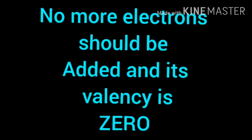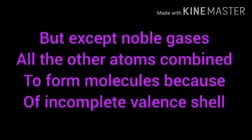No more electrons should be added or removed from inert gases — that is the reason for their non-bonding. There is no place for new electrons to enter, and no place for removal of electrons. It is a fulfilled electronic configuration, and that is why they are inert. What about other atoms other than inert gases? Except noble gases, all other atoms combine with another atom to attain the stable electronic configuration.